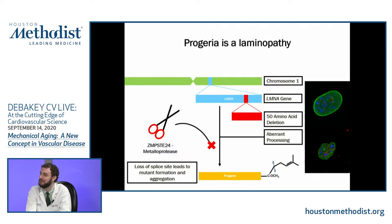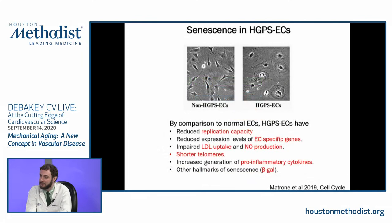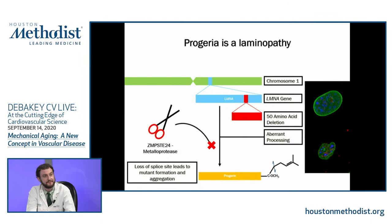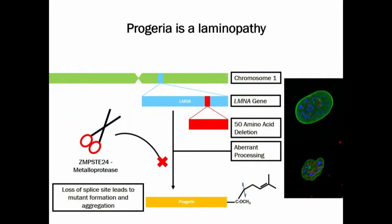Several of these problems are not related to biomechanical signal transduction — there's a lot of biological dysregulation too. Above is a normal oval-shaped nucleus, and on the bottom you can see the folded nucleus of a progeria cell. Much of this is thought to be due to accumulation of progerin itself — the mutant form of lamin A — interacting with itself and other proteins to change the shape.